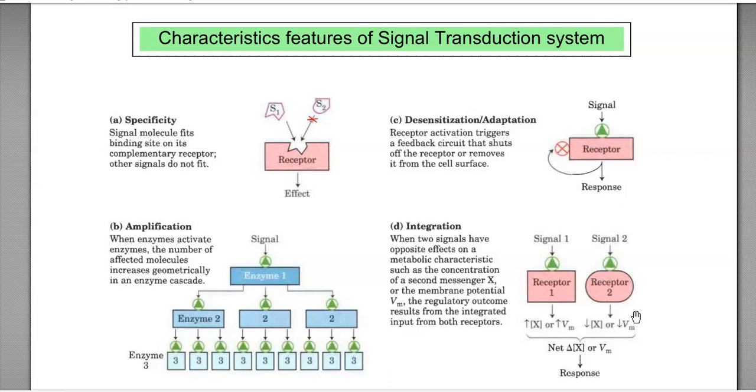One is specificity, the second is amplification, the third is desensitization or adaptation, and the fourth is integration. All these four properties are common in any kind of signal transducing system.